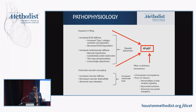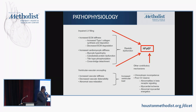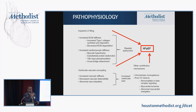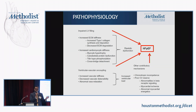HFpEF patients also have subtle systolic dysfunction. Whether you look at strain or other markers, their systolic reserve is reduced. Additionally, up to one-third to half of patients actually have chronotropic incompetence — they are unable to mount an adequate heart rate when exercise becomes symptomatic. That is why we have shied away from calling it diastolic dysfunction and moved to calling it heart failure with preserved ejection fraction, because it is more than just diastolic dysfunction.